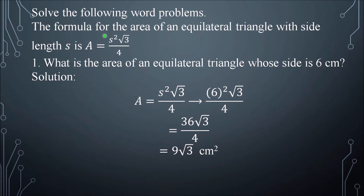The formula for the area of an equilateral triangle with side length s is A = s² × (√3 / 4). We will be using this to solve the problem: What is the area of an equilateral triangle whose side is 6 centimeters?